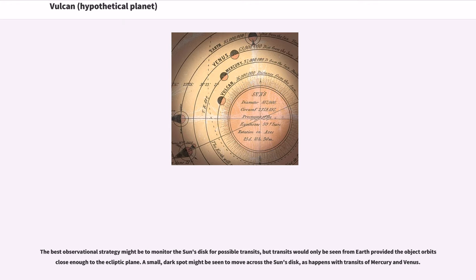The best observational strategy might be to monitor the Sun's disk for possible transits, but transits would only be seen from Earth provided the object orbits close enough to the ecliptic plane. A small, dark spot might be seen to move across the Sun's disk, as happens with transits of Mercury and Venus.